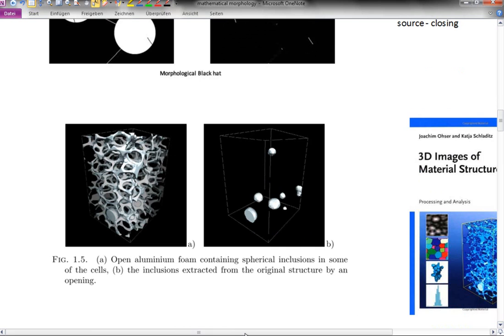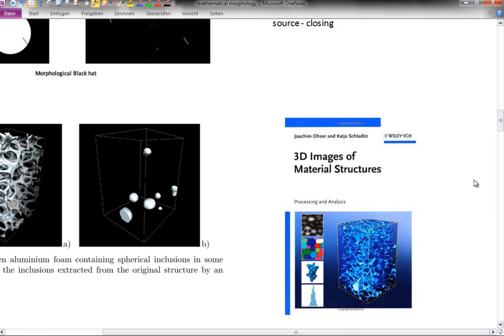I also have an example in 3D here, where this is a CT image of an aluminum foam with some solid inclusions. If you just want to look at the inclusions, then you can use an opening, which will eat away on all the thin structures until they are gone. Then you inflate the remaining structures to come back to their original size, and you find just the inclusions shown on the right hand side. This is from a book by Joachim Ohser at Fachhochschule in Darmstadt and Katja Schladitz at the Fraunhofer Institute in Kaiserslautern.